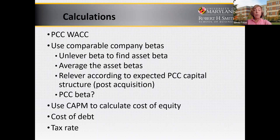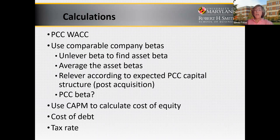To summarize: you want the risk of Precision Castparts, which you'll get by looking at comparable company betas. You want the cost of debt, the tax rate, and the weights of Berkshire Hathaway. You will use the WACC that you calculated in the DCF valuation, which we will discuss in another video.